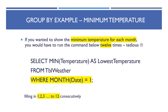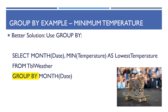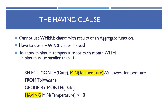Another GROUP BY example: if we want the minimum temperature for each month, instead of running separate WHERE clauses for each month, the better solution is: SELECT MONTH(date), MIN(temperature) AS lowest_temperature FROM weather GROUP BY MONTH(date). Notice that we group by the same field we put in front of the aggregate function — that's the rule.